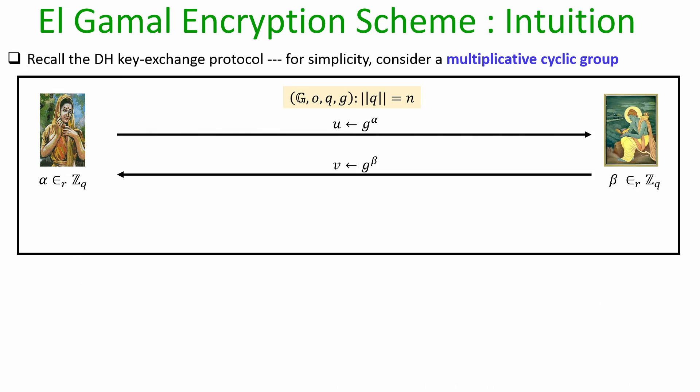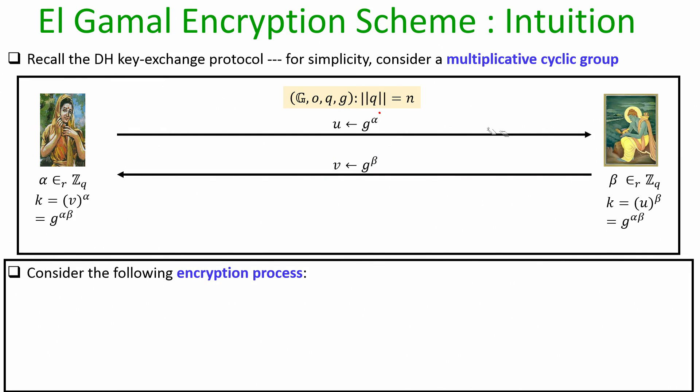Sita picks her contribution G to the power alpha and sends G^α to Ram. Independently, Ram picks his contribution beta and sends G^β. The overall key K agreed upon between the sender and the receiver is G to the power alpha times beta. We had formally proved the security of the Diffie-Hellman key exchange protocol.